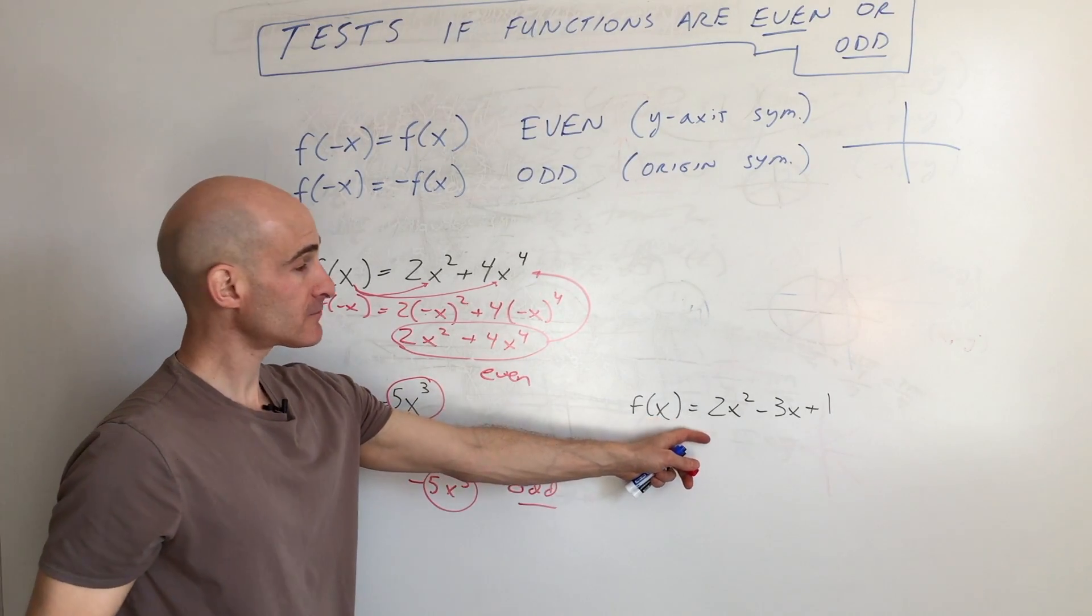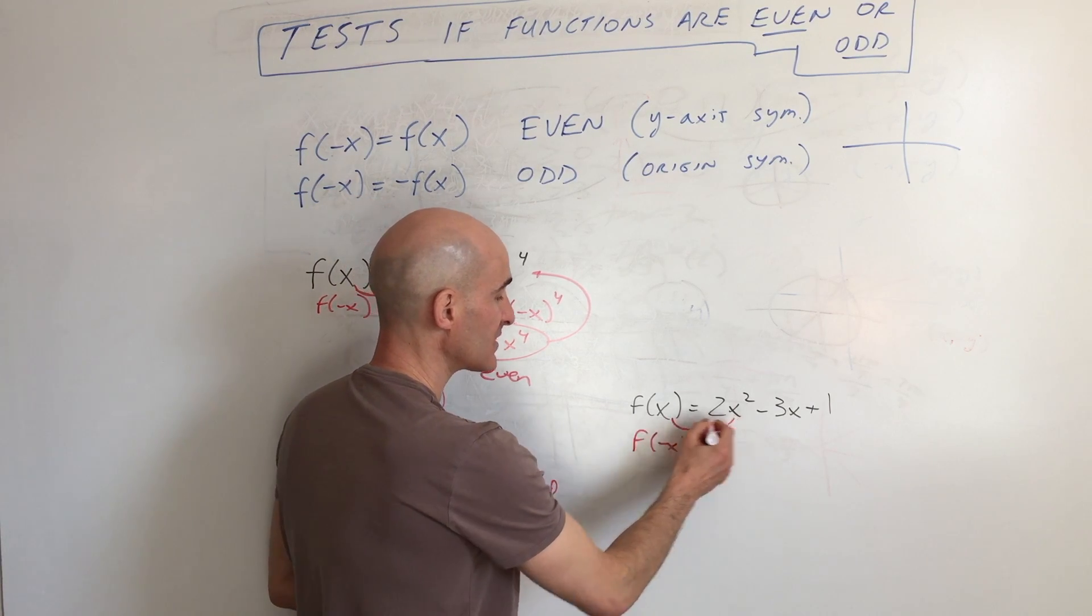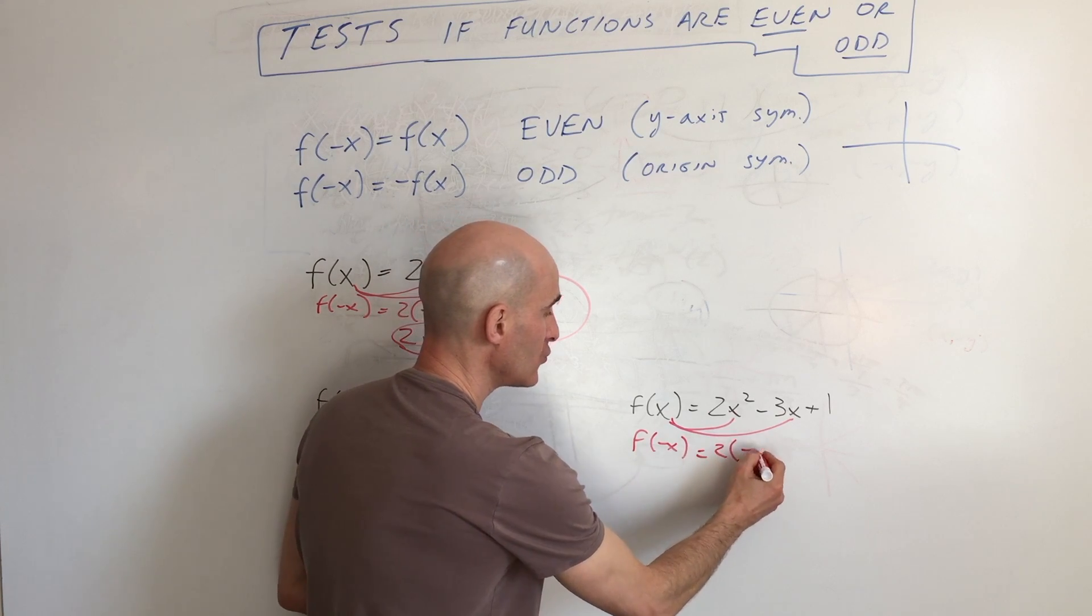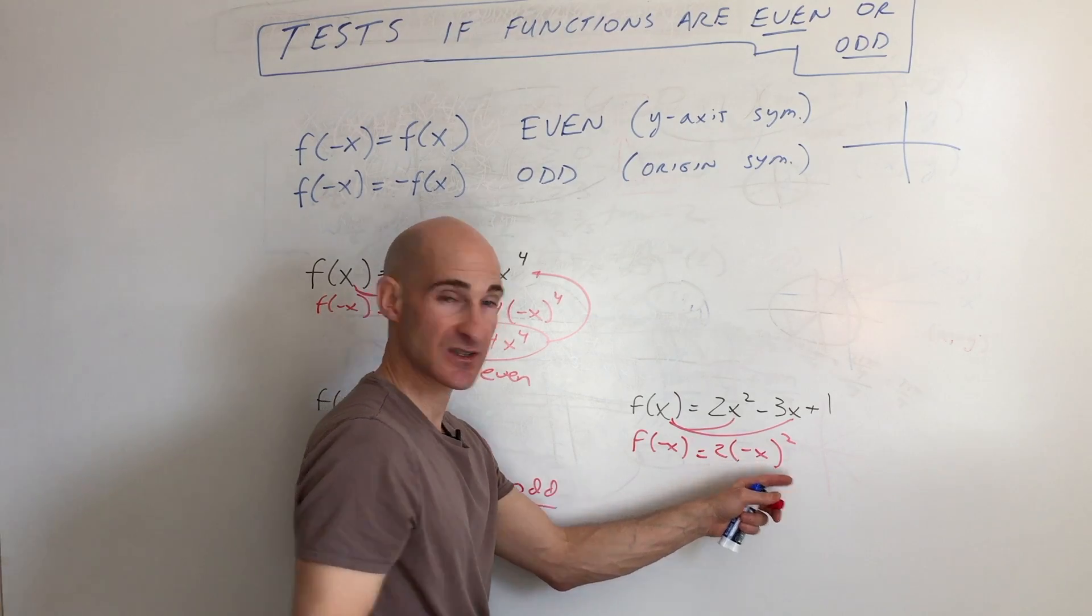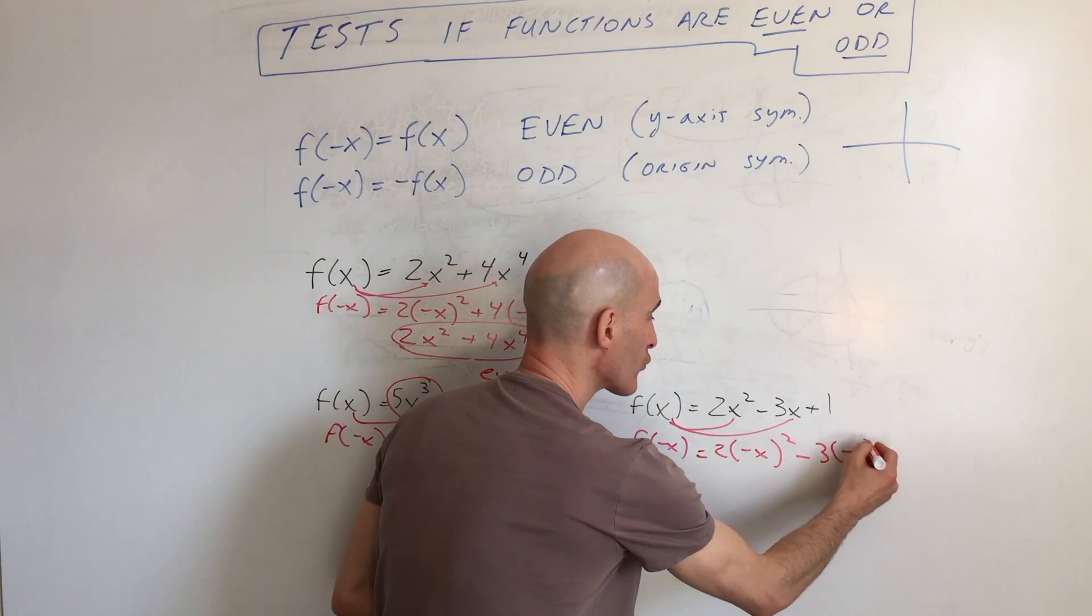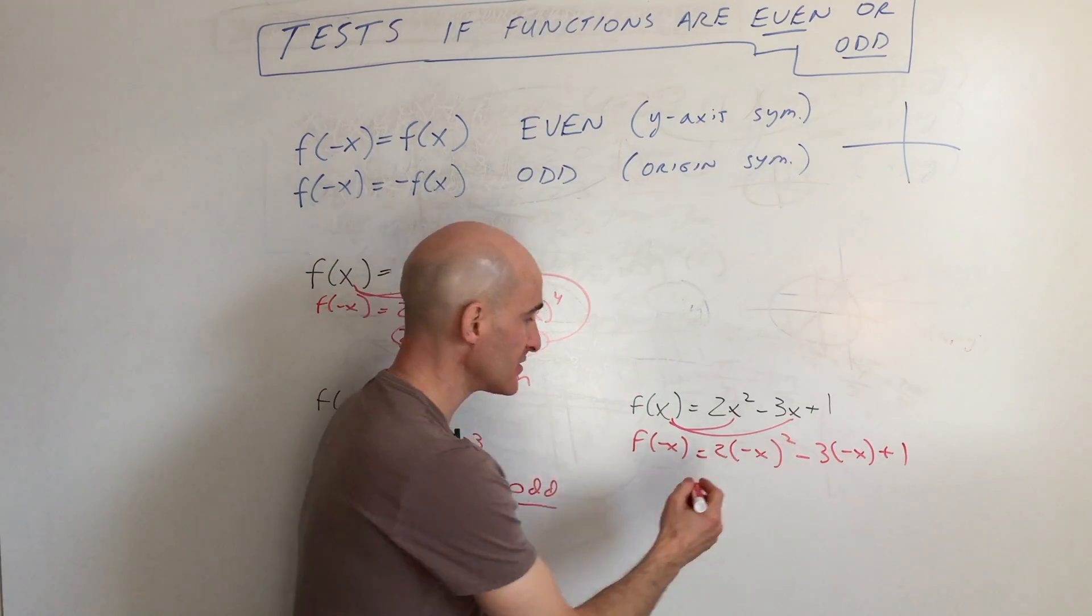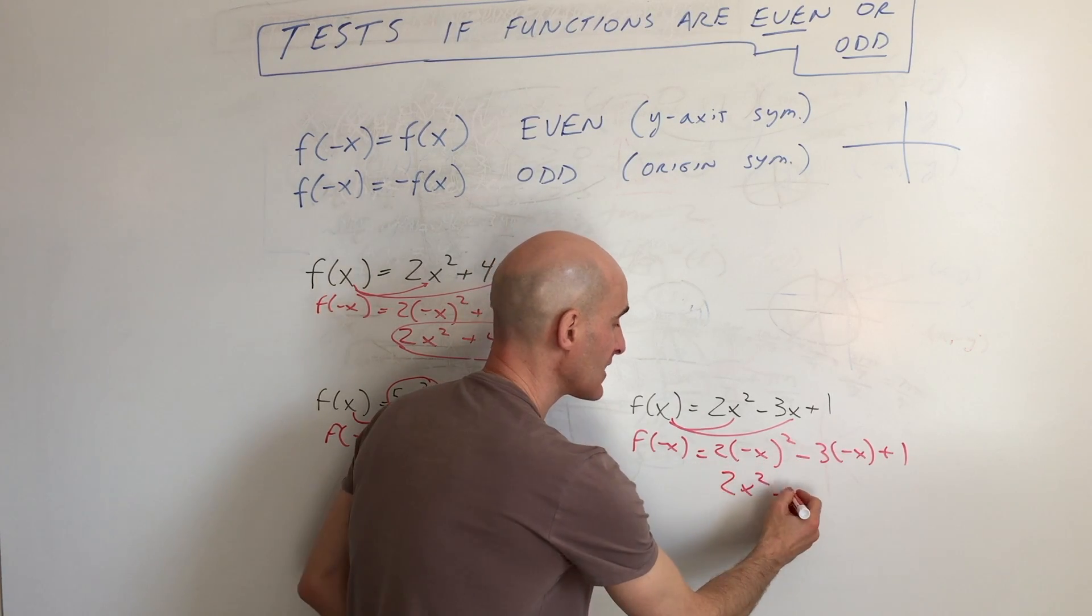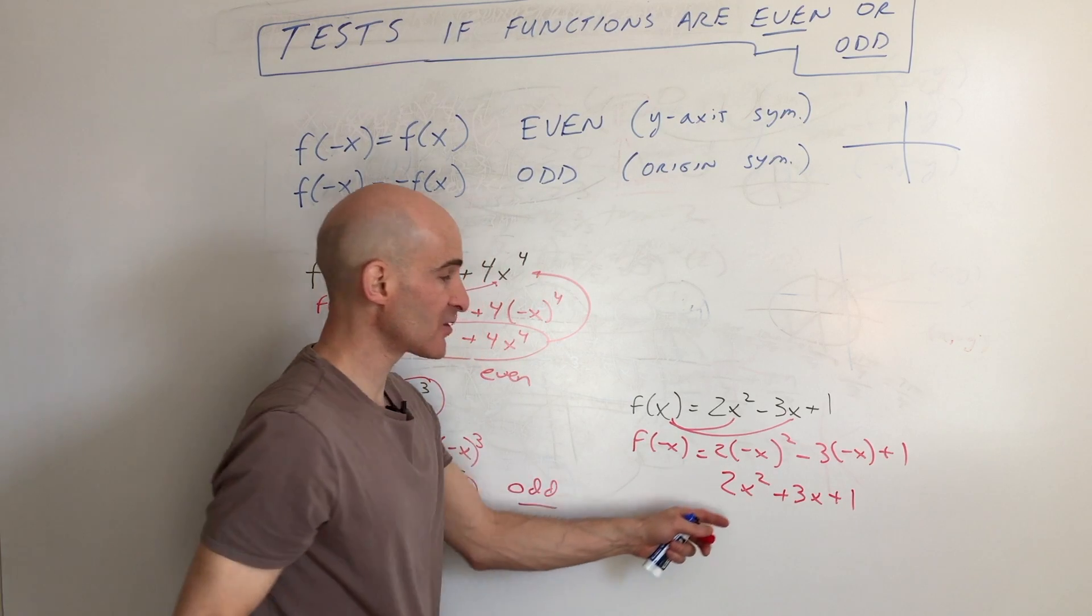Now over here, we're going to do the same thing. We're going to put negative x in place of x on the right side of the equation. So that gives us 2 negative x squared. Notice I put the negative x when I substitute in parentheses, so I take it as a whole, as a group. A negative to an even power is positive. So that's giving us 2x squared. A negative times a negative is a positive. And then this is just positive 1.